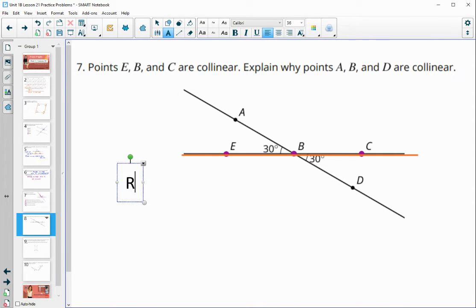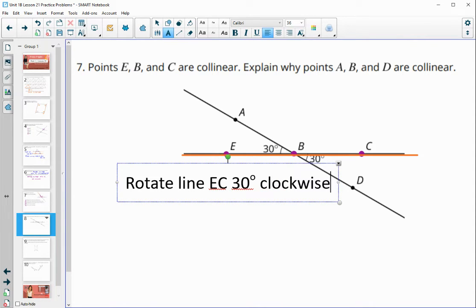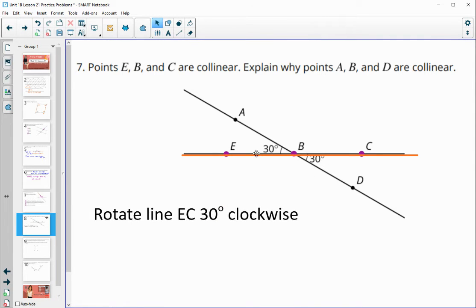So we could rotate line EC 30 degrees clockwise. And then we can, so if we do that, we can see that then we would create that other line because we see this 30 degree angle here. So if I rotate this side 30 degrees clockwise and this side, that's going to take me to, or that's going to give me line ED.